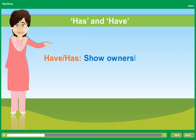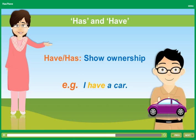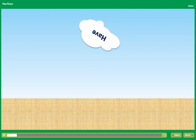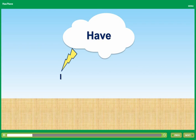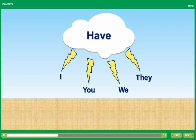Have and has are both used to show ownership. For example, I have a car. Have and has are used differently. Have is used with I, you, we, and they.